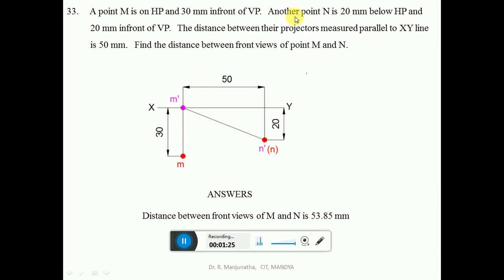The point N is 20 mm below HP. Below HP will always come below X, Y line, so you are going to get this point here. Below HP means front view, so this will be N dash.